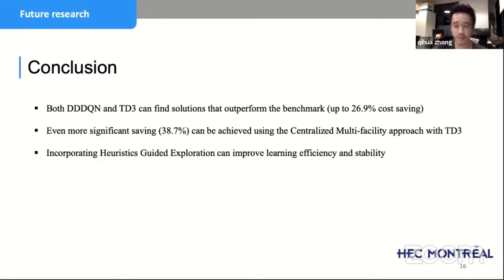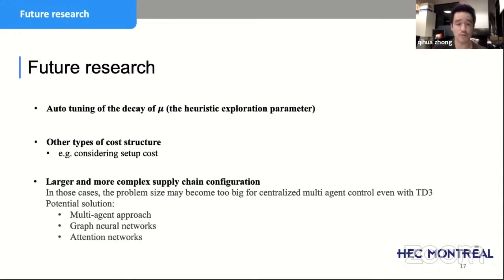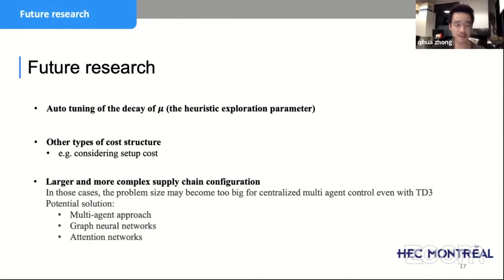This is ongoing work with preliminary results. For the future, we want to find a smarter way to decay the parameter mu — where the agent follows heuristics instead of exploring randomly. Right now it's set at 0.9 and decays periodically to zero, which is arbitrary. We want to find a way to tune it automatically.